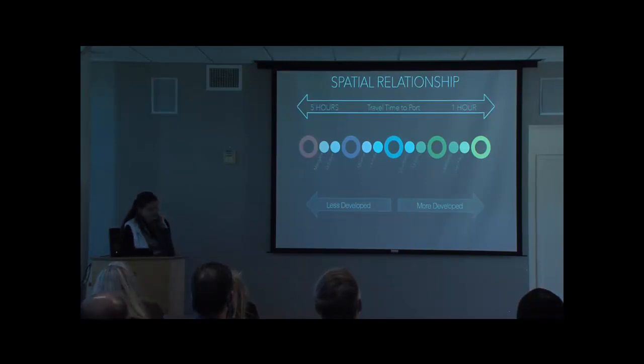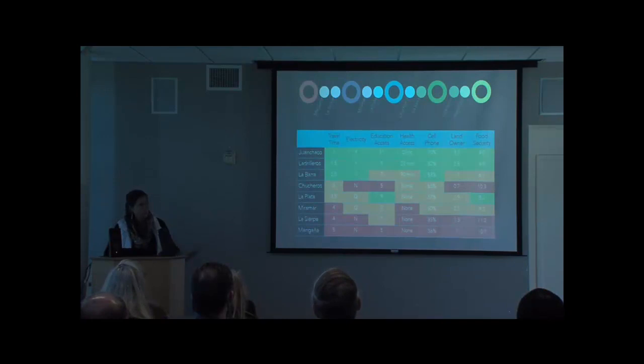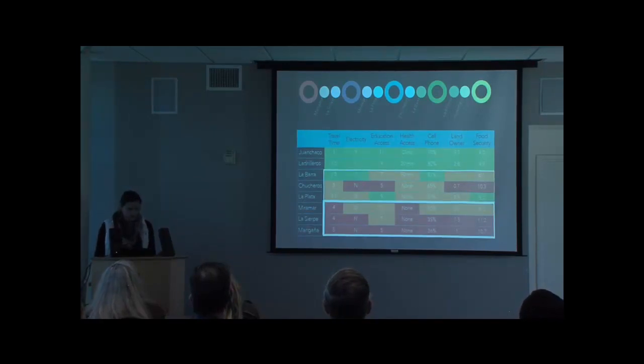So don't pay attention to the numbers here so much in the main block, but this table is comparing various development indicators across communities as shown up here. We can see that the lowest values of development, shown in red and orange, are found in the more distant communities down towards the bottom, supporting the validity of using access to port as a proxy for development stage.